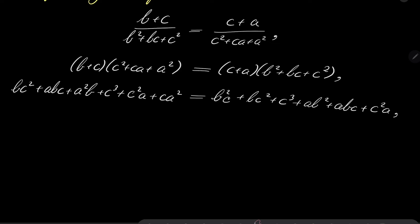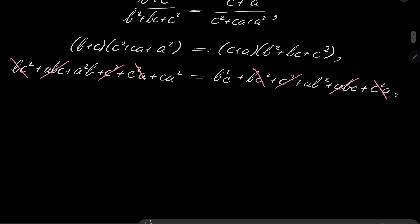Now let's cancel what is possible. So abc with abc, c³ with c³. What else can be cancelled? bc² with bc², and one last thing which can be simplified is c²a with c²a. So we are left with a²b + ca² = b²c + ab².